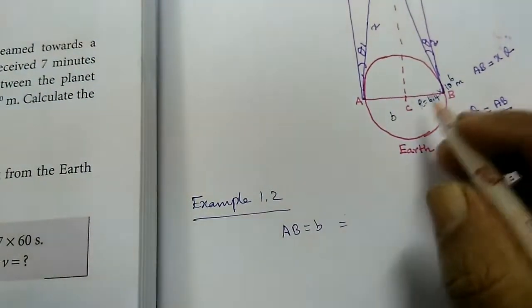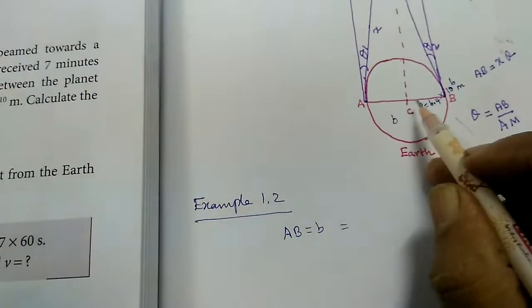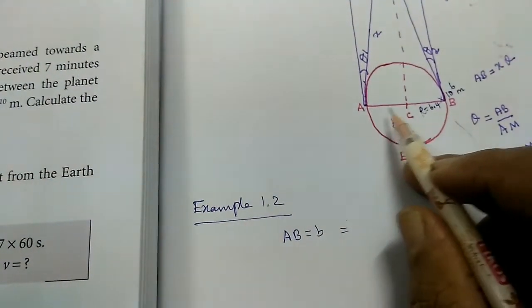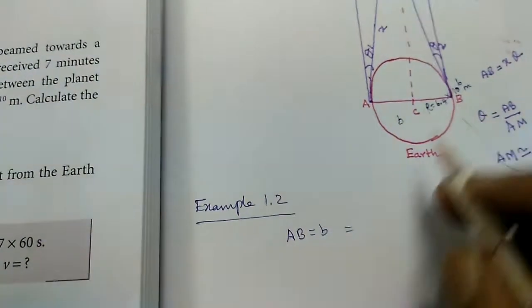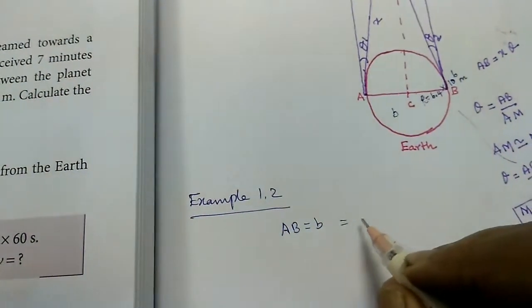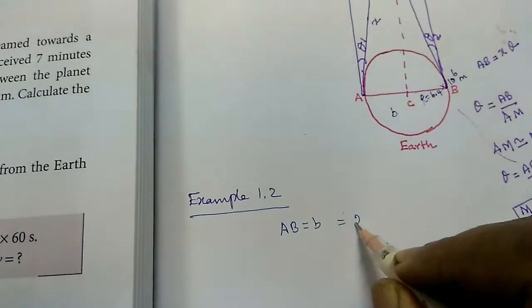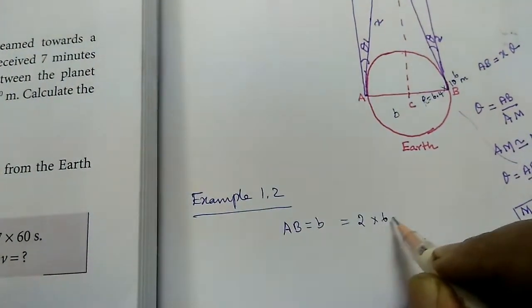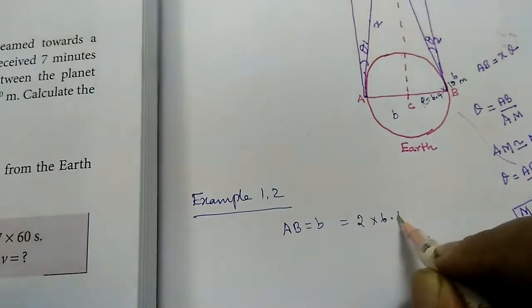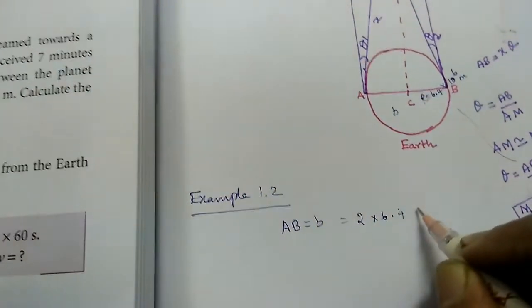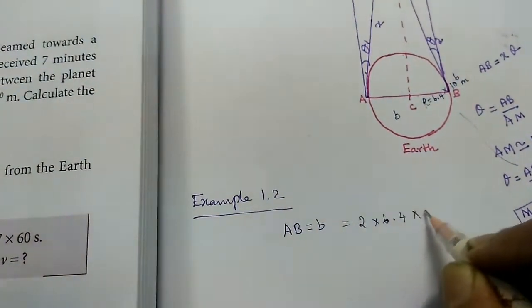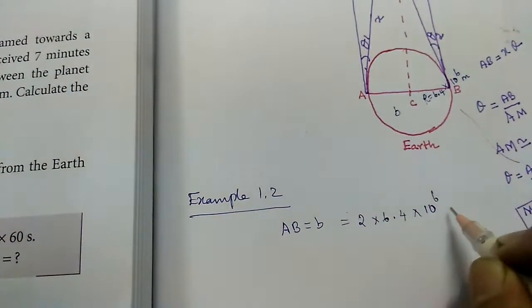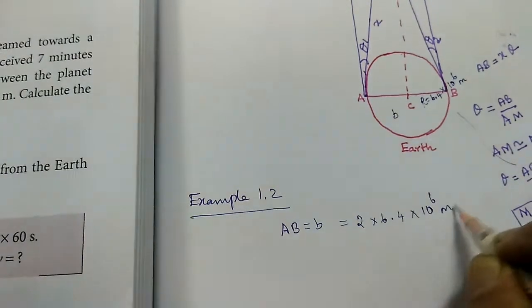In terms of the radius, A-B is the diameter, which is multiplied by 2: that is 2 into 6.4 into 10 power 6 meters.